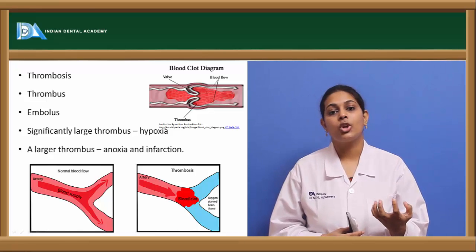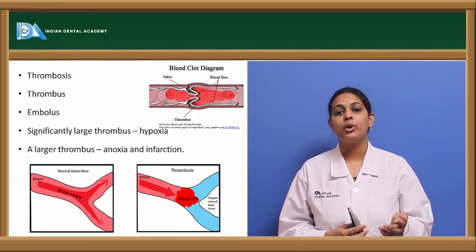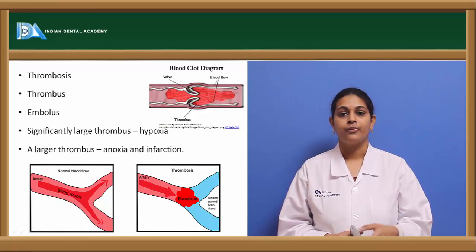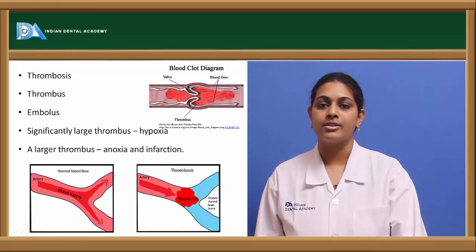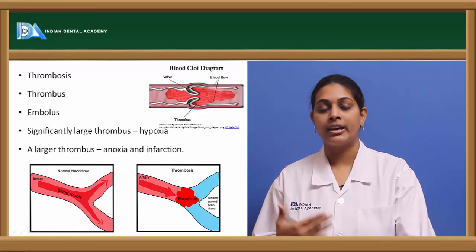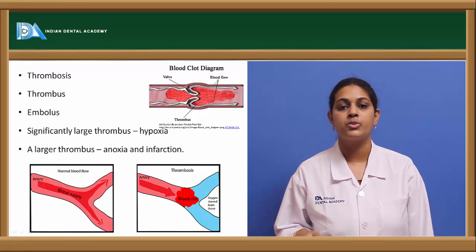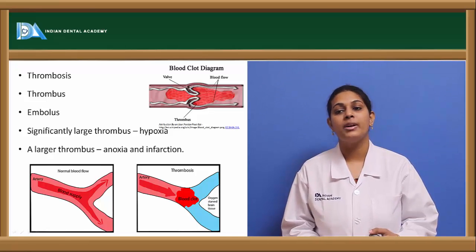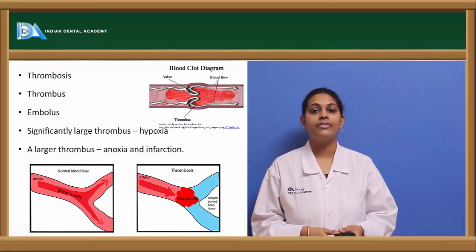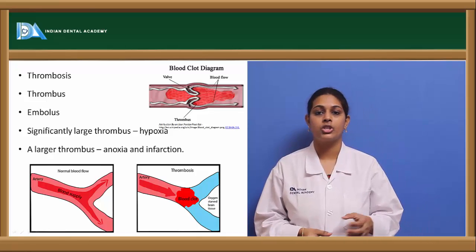When the thrombus is detached from its original site of formation, it is known as an embolus, which can be carried into any organ through the circulation. A large thrombus might result in hypoxia — a decrease in the oxygen-carrying capacity of the blood. A more larger thrombus might result in anoxia, that is complete deprivation of oxygen, which can lead to a condition known as infarction.